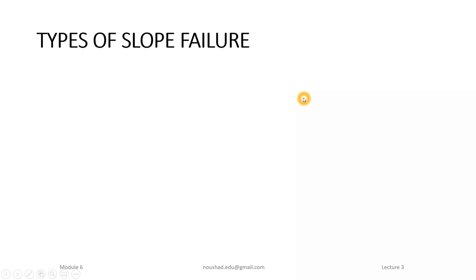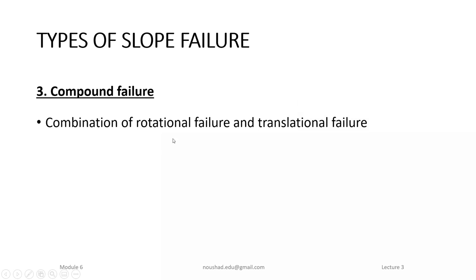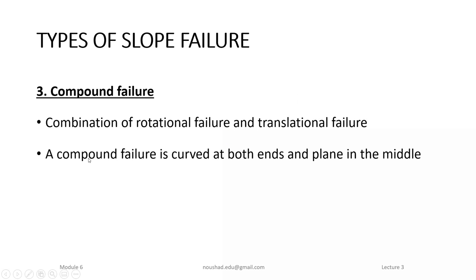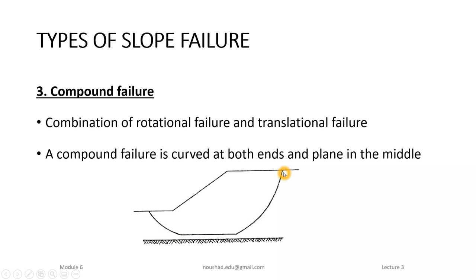Compound failure is a combination of rotational failure and translational failure. At the starting and ending ends the failure surface is curved (rotational), while at the midpoint it is a planar surface (translational). This combined form is called compound failure.